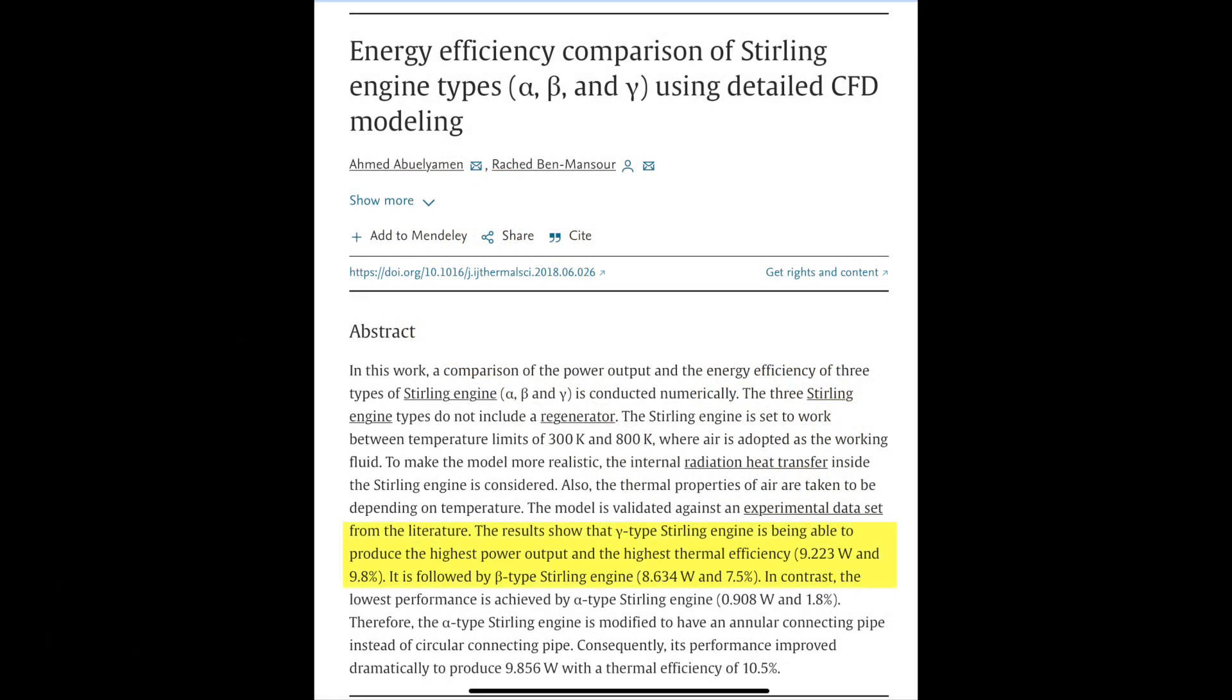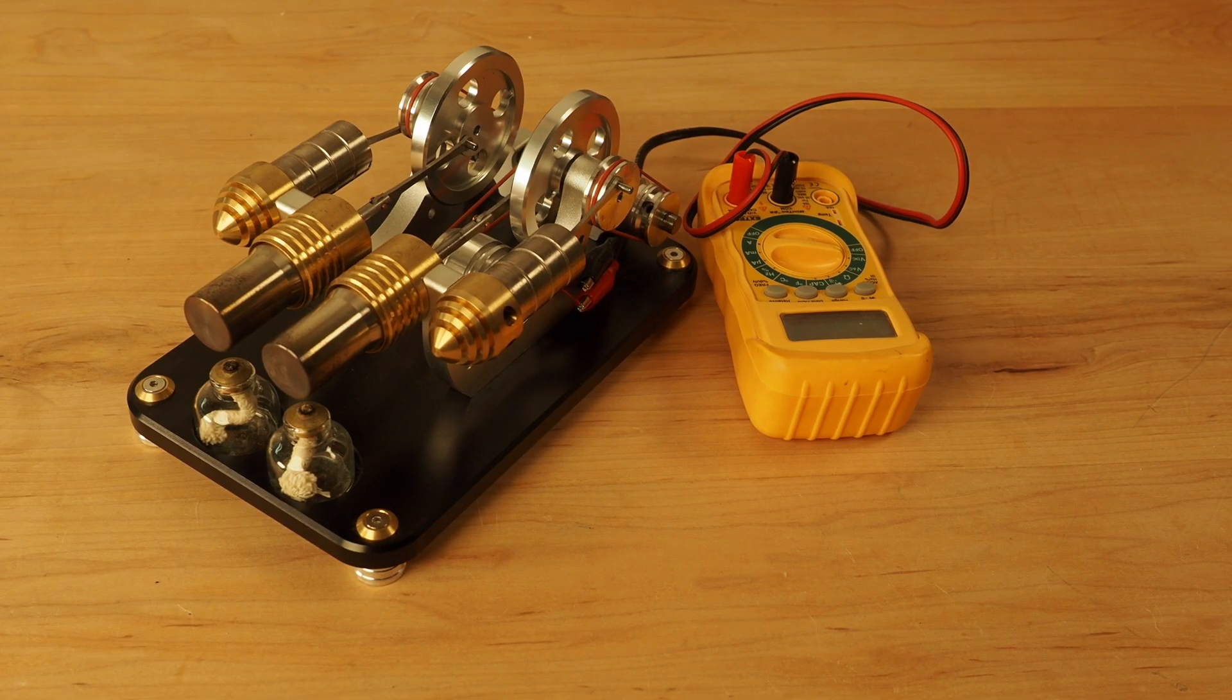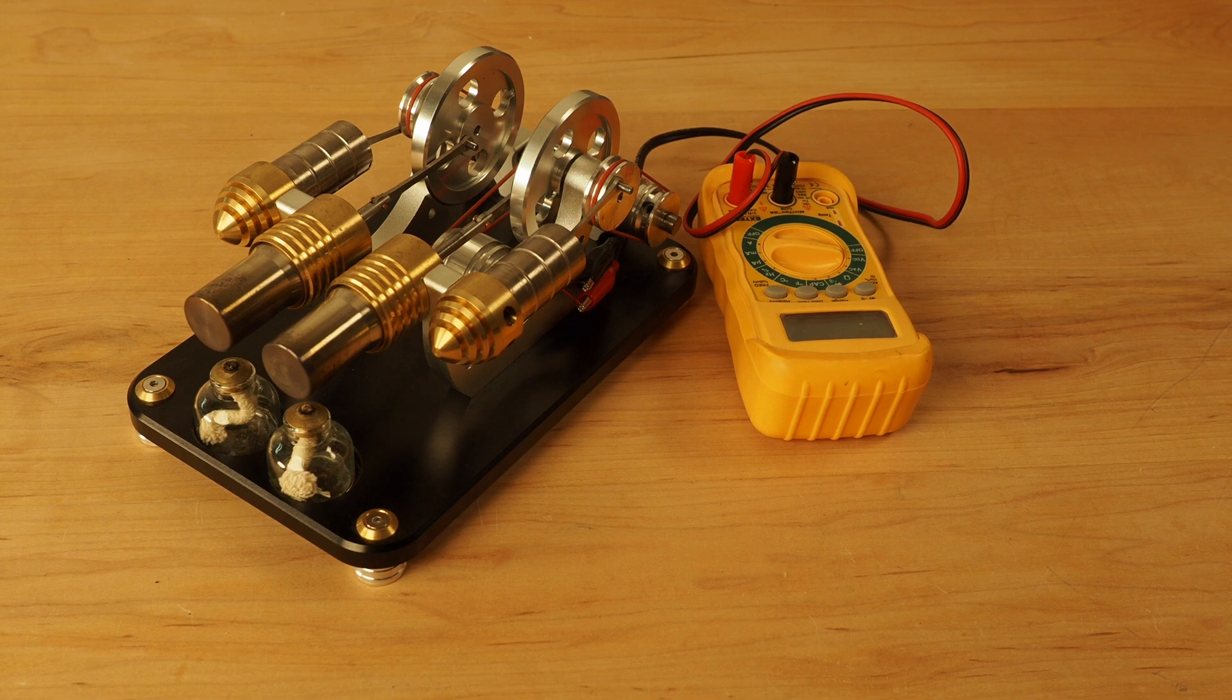Recent research shows that the gamma engine has a practical efficiency level of around about 9.8 percent. So what does that mean for our T-Lite charger?